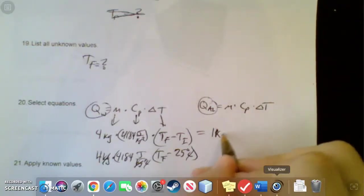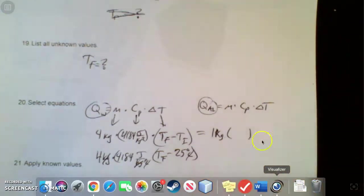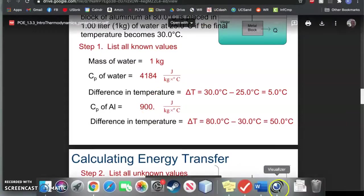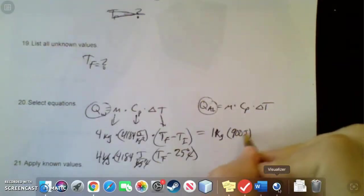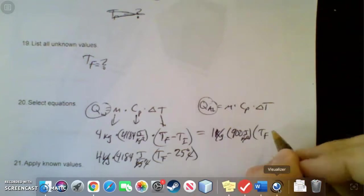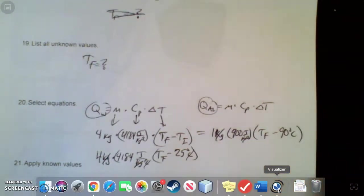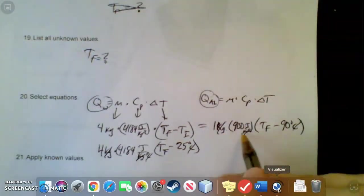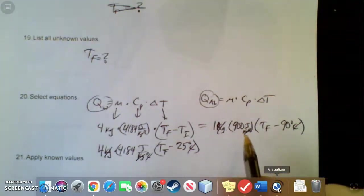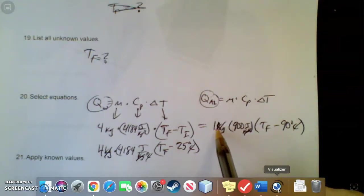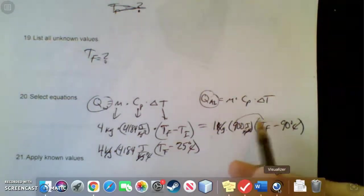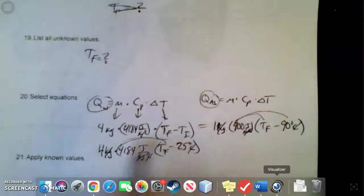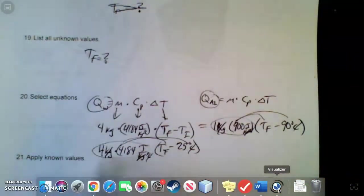We basically are going to need to solve for this, but on the other side of the equation you're going to have the exact same thing but for aluminum. So aluminum you have a one kilogram mass, and aluminum has its own number which was 900, that's a lot nicer, joules per kilogram degree C. Its temperature final I still don't know, but I do know its temperature initial was 90 degrees Celsius.